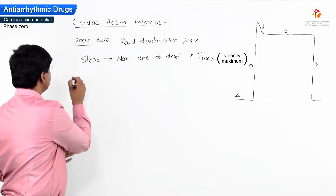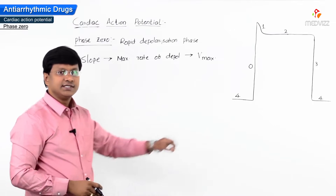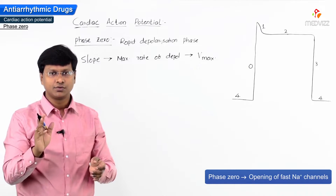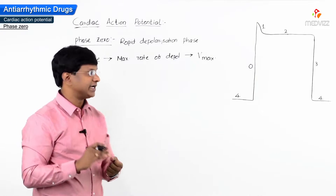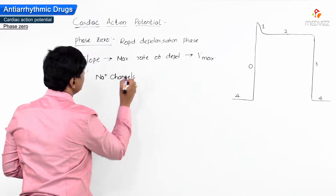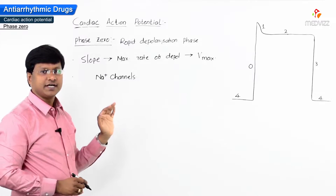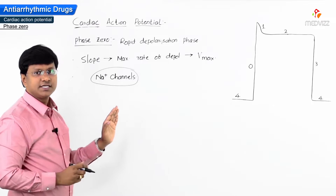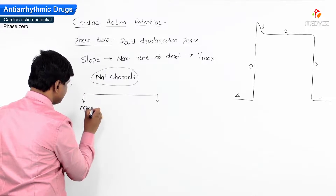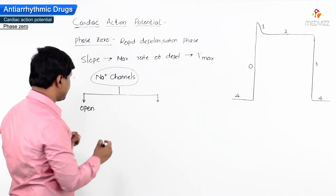Now, why is Phase 0 occurring? Phase 0 is due to the opening of the fast sodium channels. This particular sodium channel exists in three forms: open sodium channels, inactivated sodium channels, and closed sodium channels.